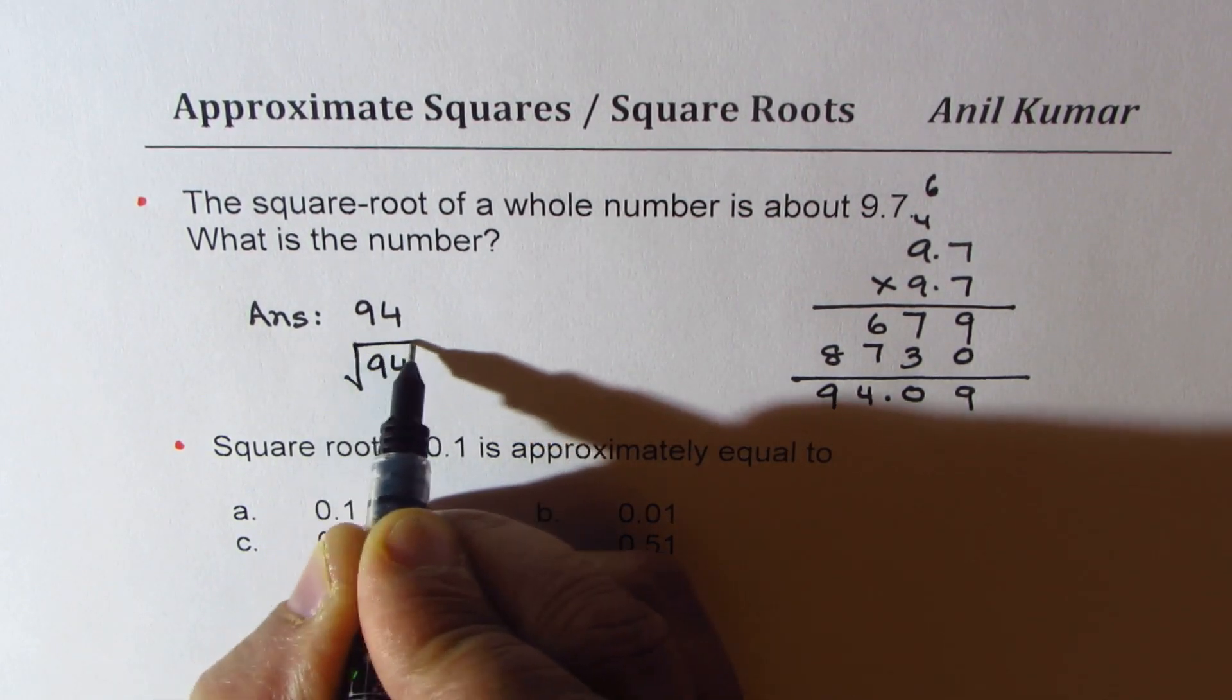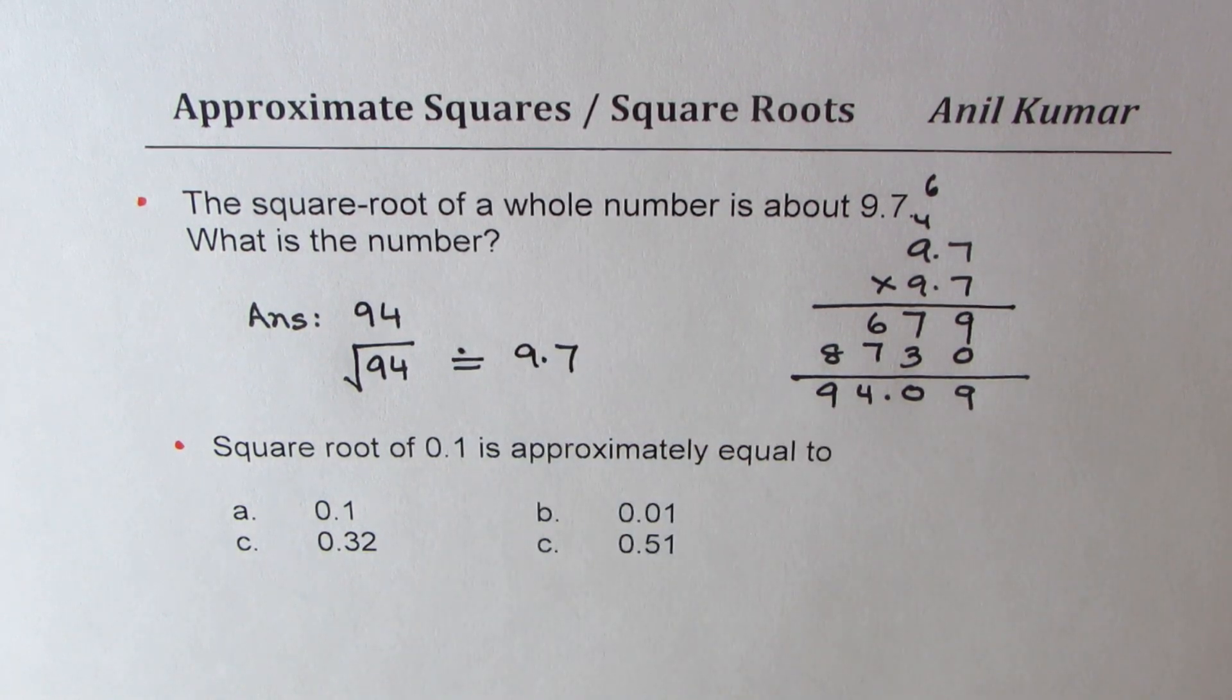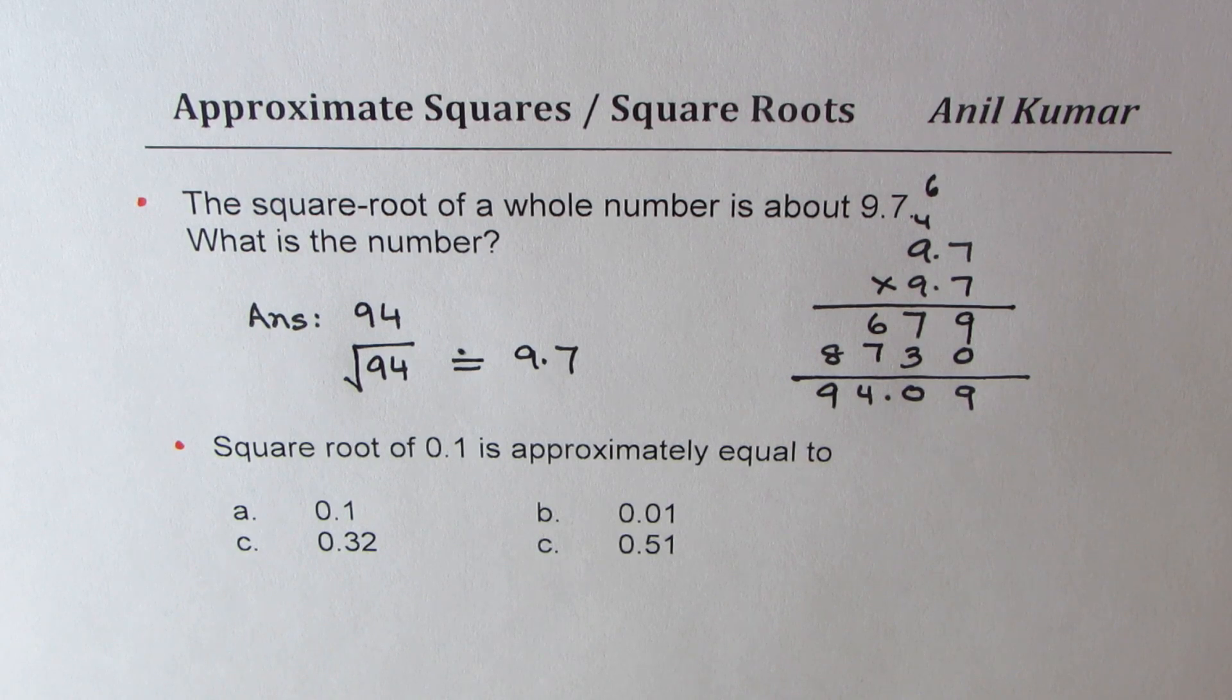You can check that square root of 94 is approximately equal to 9.7. So that is how you could answer this question. Now let's look into the second question.